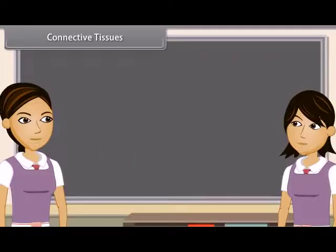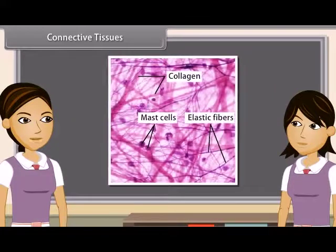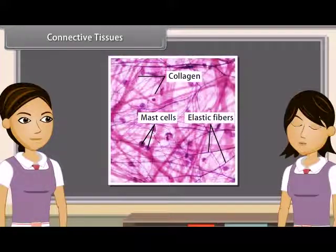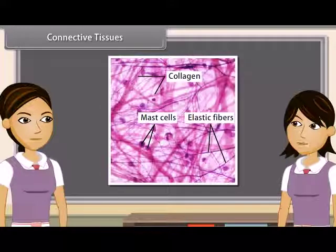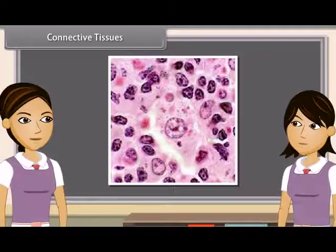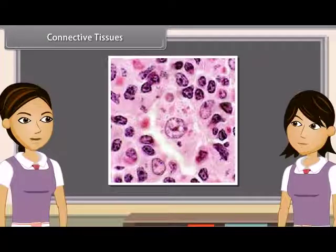Connective tissues bind different organs and parts of various organs together. The cells of connective tissues are living, separated from each other, and very few in numbers. A gel-like intercellular substance called matrix forms the main bulk of the connective tissue. Matrix is fibrous in nature and binds other tissues.